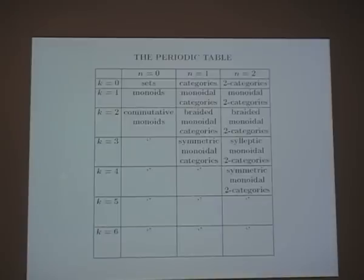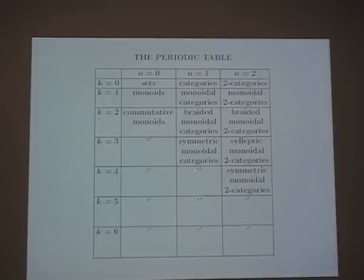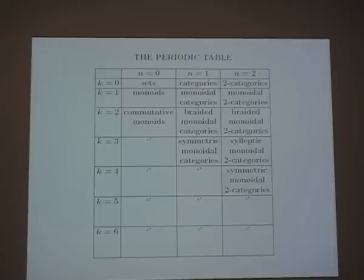There's a conjecture called the stabilization hypothesis: after you get down to k equals n+2, you don't get anything more interesting — it settles down. Recently Jacob Lurie and André Joyal have given proofs of this stabilization hypothesis in different formalisms, and there are other proofs in other formalisms as well.